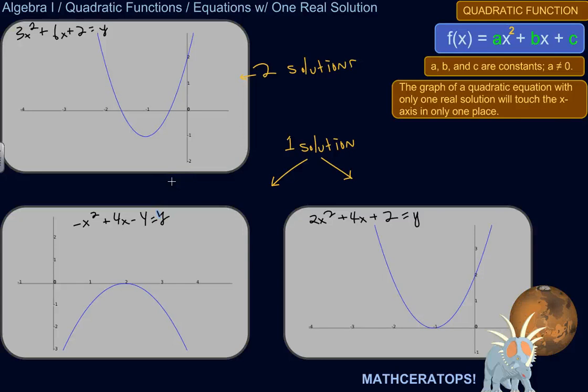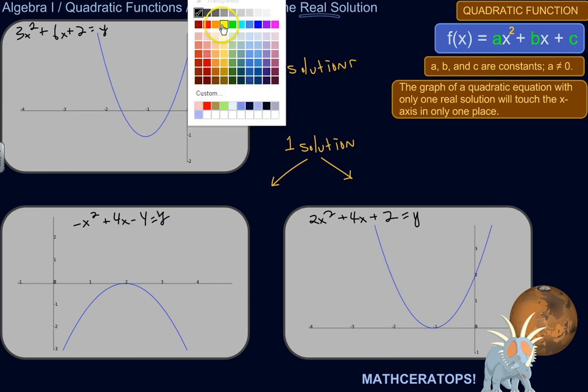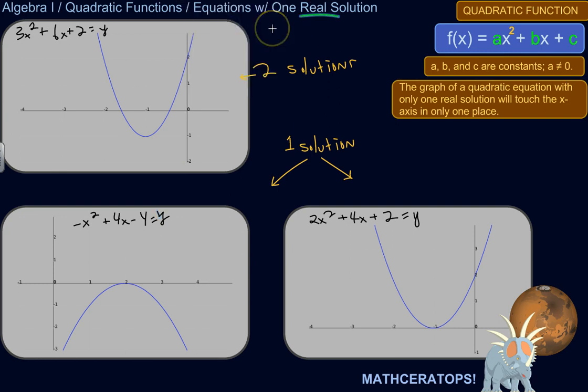All right, so I want to show you some examples of quadratic functions where there's one real solution, one solution that is a real number, meaning it's not an imaginary number, which you haven't dealt with yet. But don't get tripped up when there's one real solution, one solution of the kind that you'd be looking for at this stage.